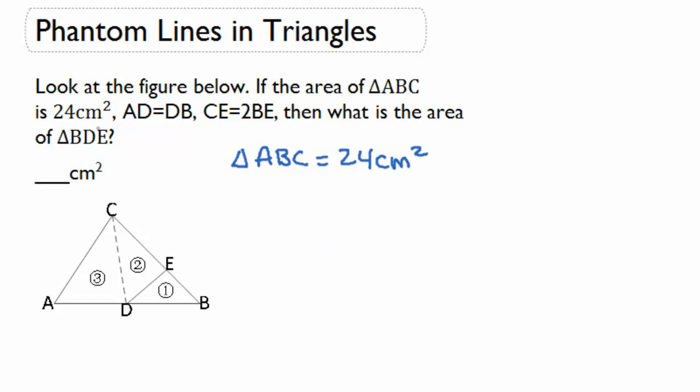The next thing that they gave us is the fact that AD and DB are the same length. If they're the same length, that means they have the same base. Since DC is the height for each of them, we know that they also have the same height.